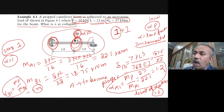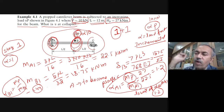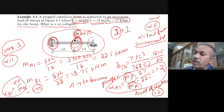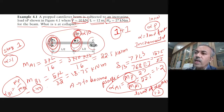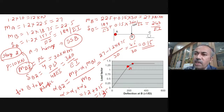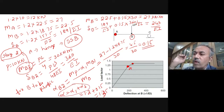Wherever alpha is low, that is the place where the hinge gets formed faster. In this problem, hinge gets formed here first. Once hinge gets formed, automatically your propped cantilever becomes simply supported. Then things change — you find out the next alpha, and the final alpha will be the sum of these two alphas.